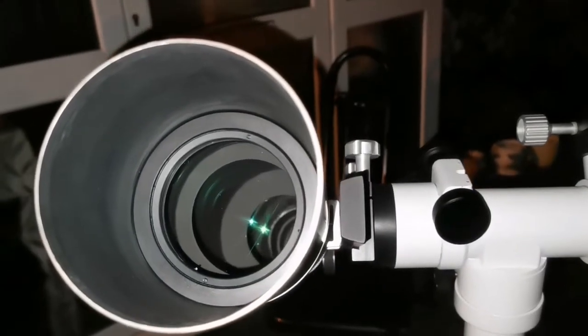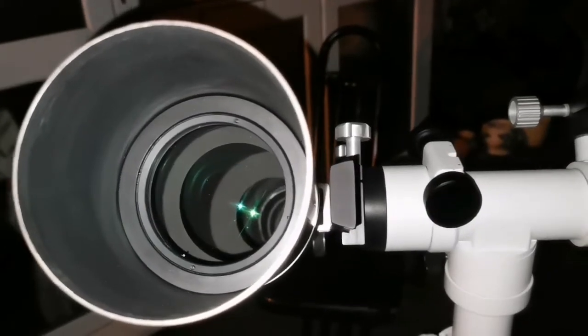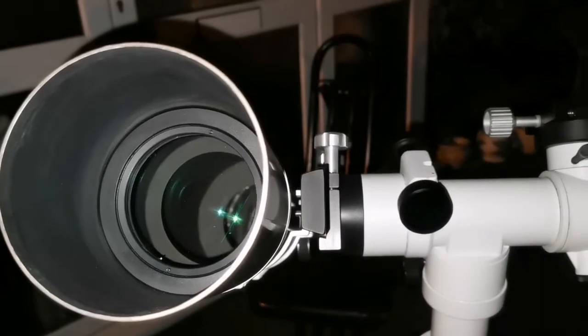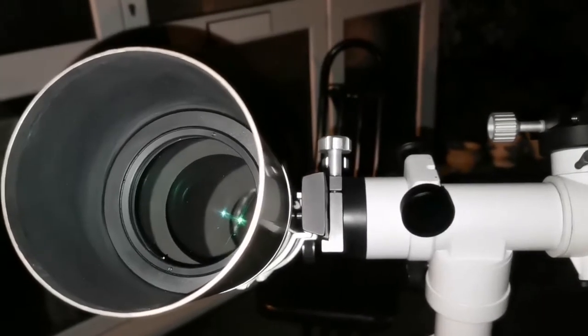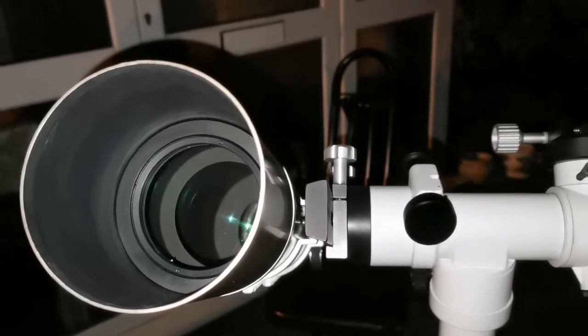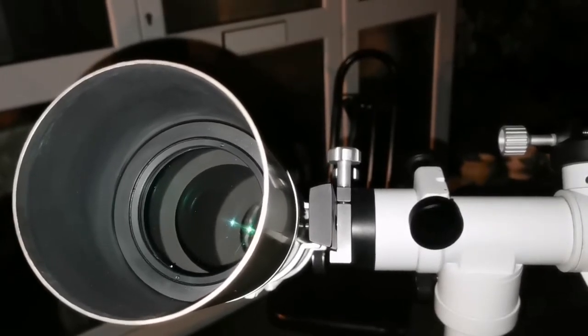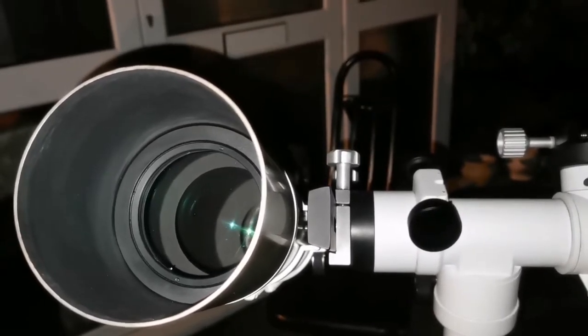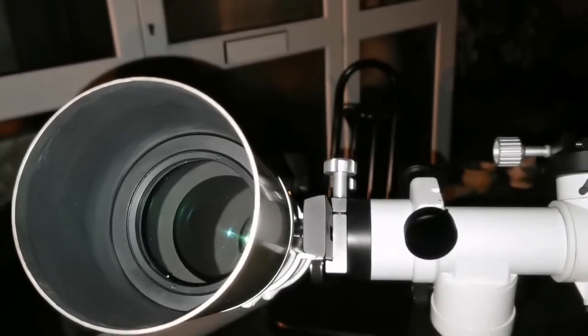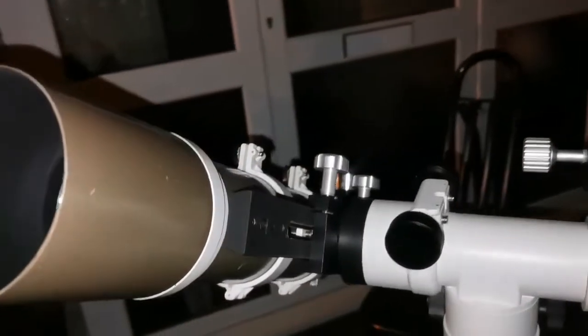The clean and neat images this ED refractors provide are very close to the images you can see with the Fraunhofer telescope. It means a very high F number between anything between F11 to F15. Almost chromatic aberration free. It's amazing image quality.